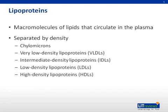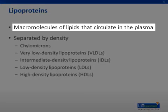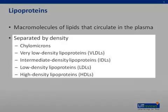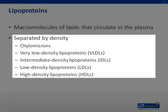When discussing cholesterol, we must first talk about lipoproteins. Lipoproteins are macromolecules of lipids that circulate in the plasma. The various types of lipoproteins are separated by density. The largest and least dense of lipoproteins are the chylomicrons. As you move down the list from VLDLs to HDLs, the lipoproteins become smaller and more dense.